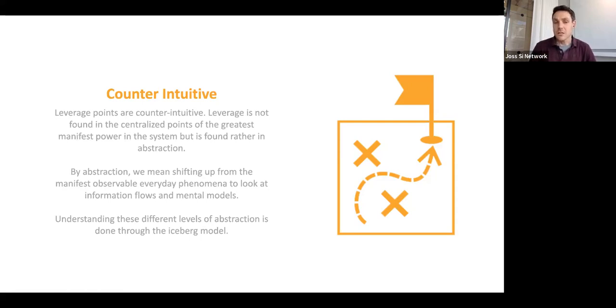If we want to actually change the system, we need to operate on different levels. We need to operate on a systemic level of system structures, mental models, and so forth. That's a different level of abstraction. It's more abstract in the sense that we're dealing with relationships, patterns and structures, and mental models. That's why it's counterintuitive, why it's important to understand these different levels of abstraction that we'll talk about when we talk about the iceberg model.